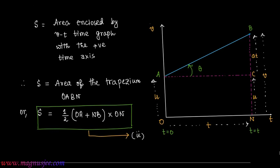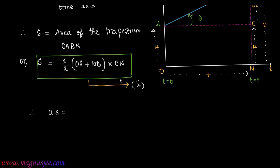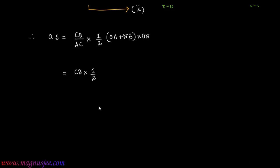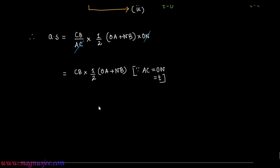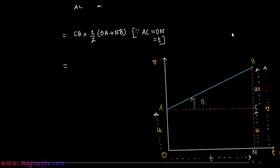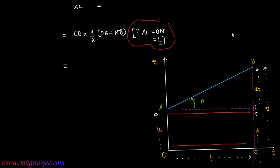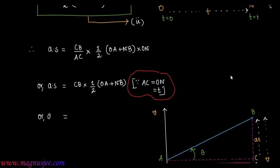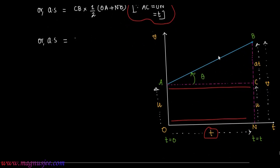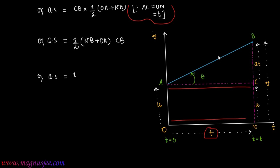The product a·s = (CB/AC) × ½(OA + NB) × ON = CB × ½(OA + NB), since AC = ON = t, so they cancel out. Therefore a·s = ½(NB + OA) × CB.